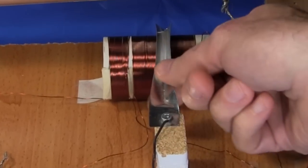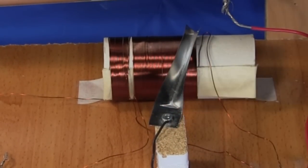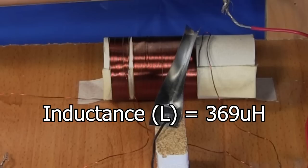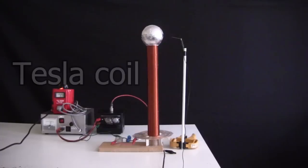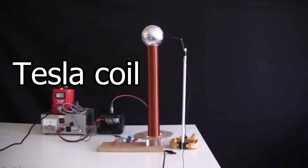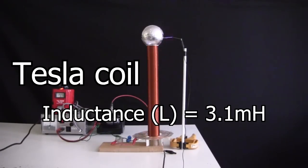For the coil in my crystal radio, if the wiper blade is all the way to the right, in other words we're using the full coil, then the inductance is 369 microhenries. But the secondary coil for this small Tesla coil is 3.1 millihenries.